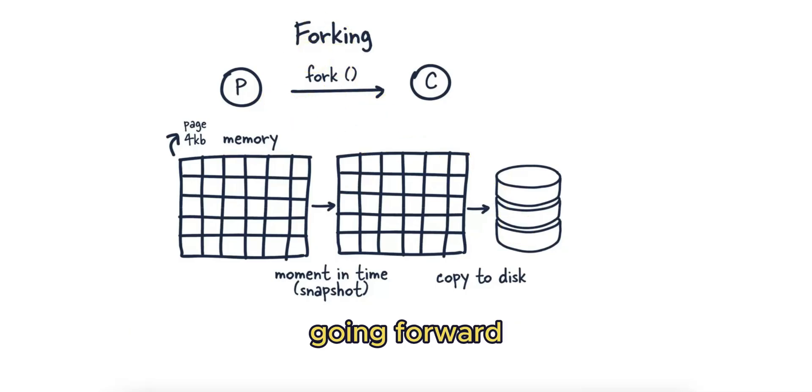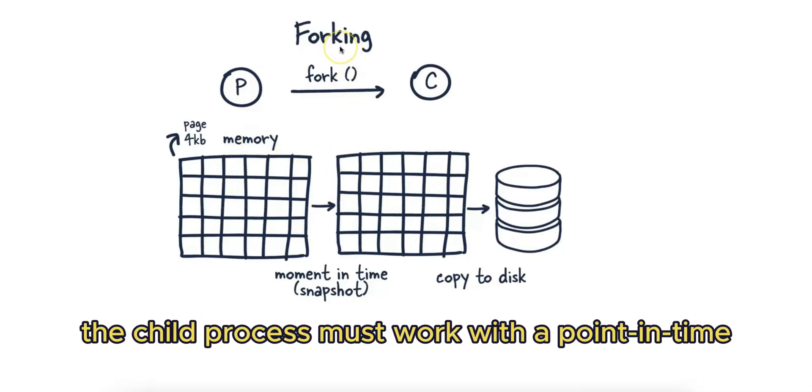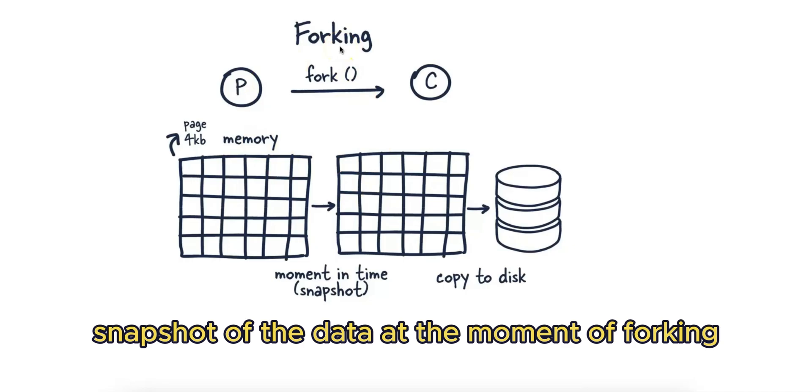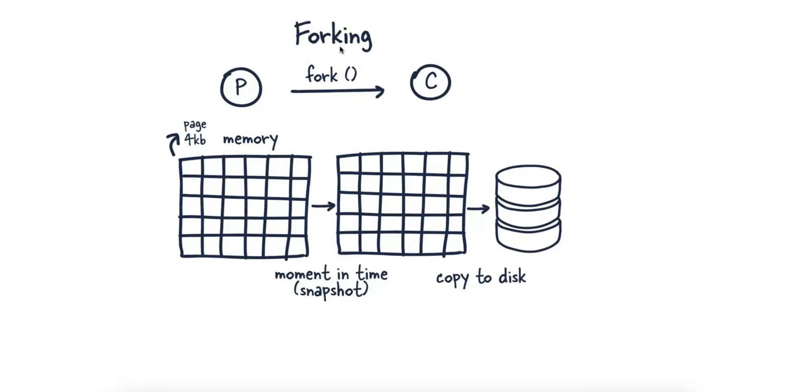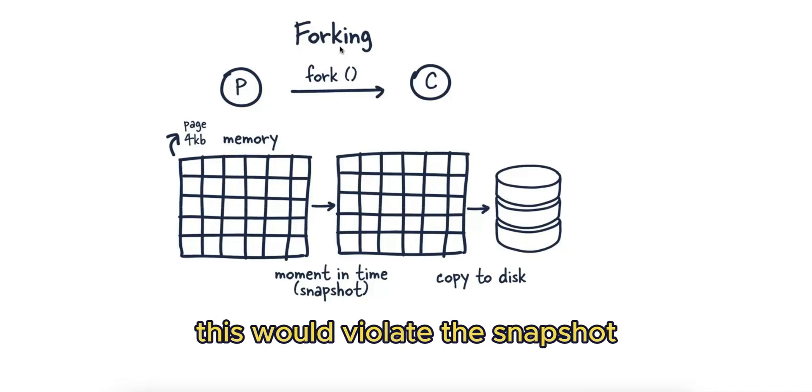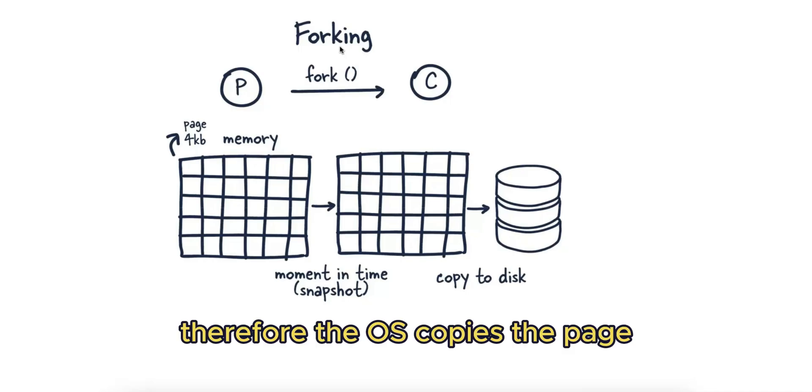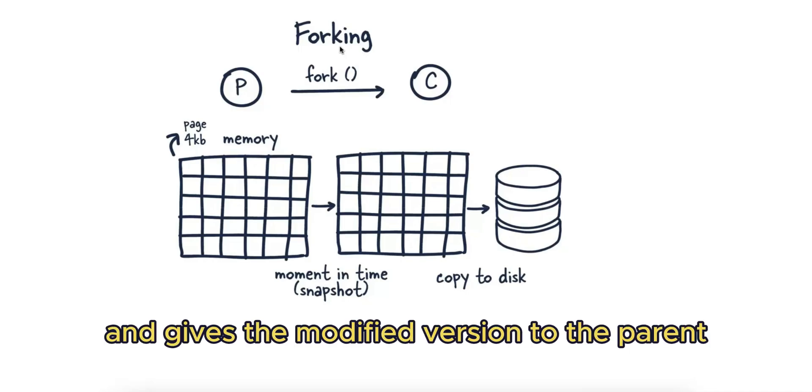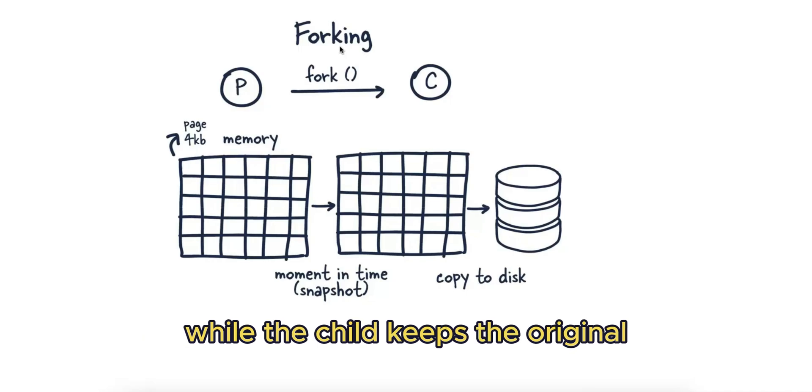So why are we copying pages? When Redis is forking, the child process must work with a point-in-time snapshot of the data at the moment of forking. If the parent modifies a page or memory block, this would violate the snapshot. Therefore, the OS copies the page and gives the modified version to the parent while the child keeps the original.